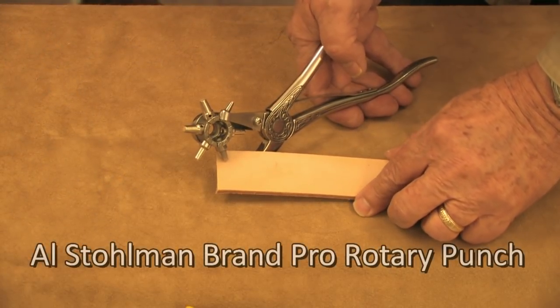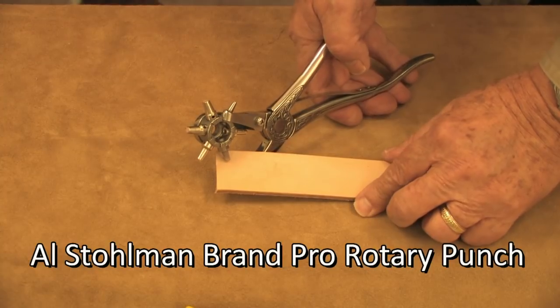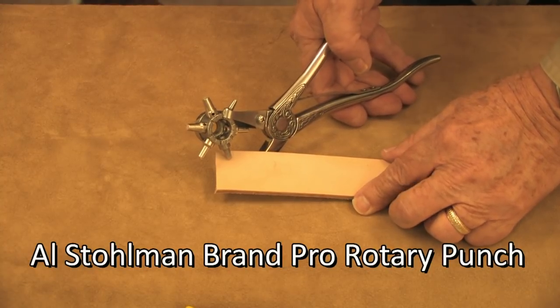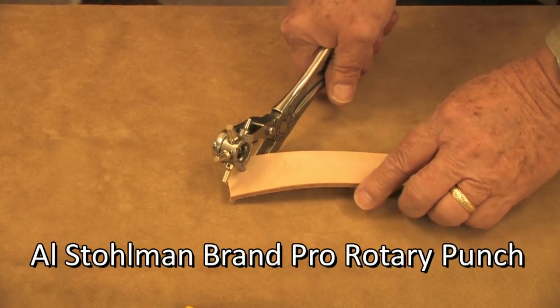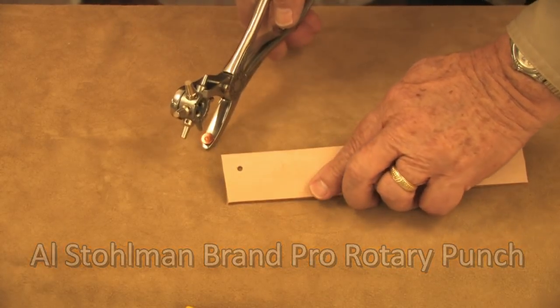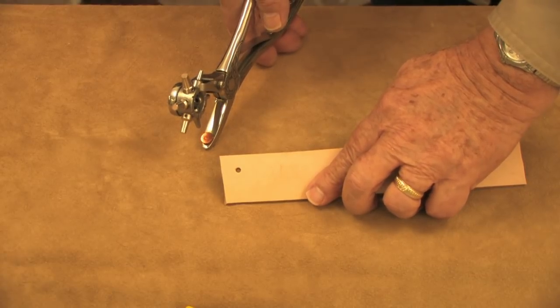Now I have here the Alstolman brand punch which is all stainless steel and much better quality overall. And you'll notice now that when I punch with it, it's a lot easier to do and I get a clean nice hole.